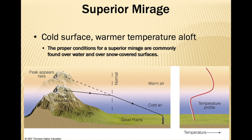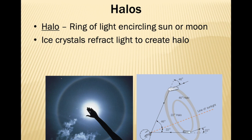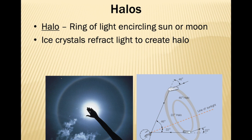Halos are rings of light encircling the Sun or Moon. They may form due to both the Sun and Moon. Ice crystals refract the light to create a halo. For the formation of a halo, we need cirrostratus clouds — these clouds contain many ice crystals which refract light to create a circular pattern around the Sun or Moon. The most prominent halo is the 22-degree halo, called so because it makes a 22-degree angle with the line of sunlight. Remember, halos are always formed by cirrostratus clouds.